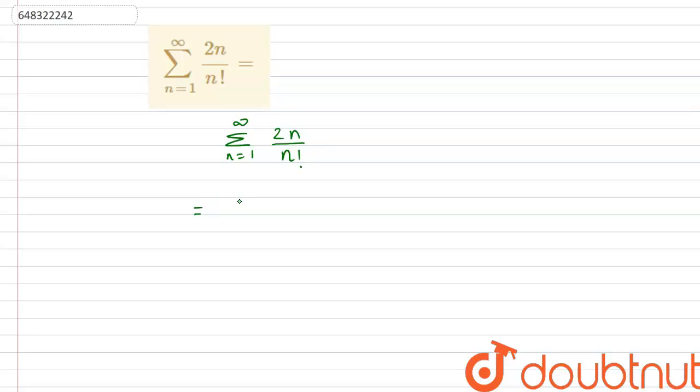So let us consider this. We have n equals 1 to infinity. 2 into n by n factorial can be reduced to 2 divided by n minus 1 factorial, since n factorial is n into n minus 1 factorial. We can cancel this n. And we can also take this 2 out of the summation because it is multiplied with each of these terms. So n equals 1 to infinity, and then we just have the summation of 1 by n minus 1 factorial.